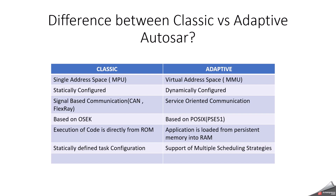The second question is: what is the difference between Classic and Adaptive AUTOSAR? Classic AUTOSAR is statically configured, while Adaptive AUTOSAR is dynamically configured. In Classic AUTOSAR we use a single address space; in Adaptive AUTOSAR we use a virtual address space. Classic AUTOSAR is based on signal-based communication — CAN and FlexRay — but Adaptive uses service-oriented communication. Classic is based on OSEK; Adaptive is based on POSIX. In Classic, code executes directly from ROM, but in Adaptive, the application is loaded from persistent memory into RAM.